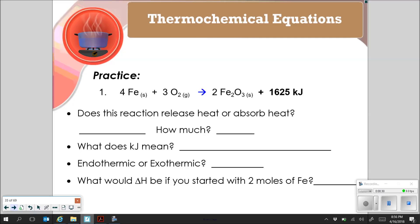Looking at a thermochemical equation, we have 4 moles of iron reacting with 3 moles of oxygen to produce 2 moles of iron 3 oxide, and then we're producing 1625 kilojoules of energy. Note that this energy is a product. When your energy is a product, it's going to be released. And when your energy is a reactant, it's going to be absorbed.